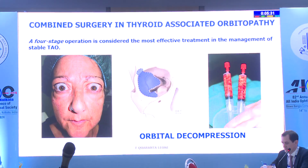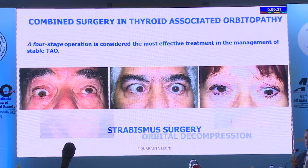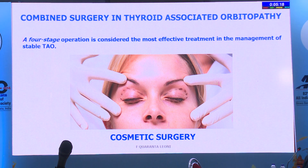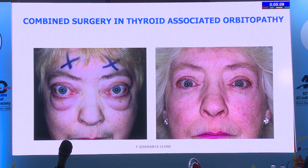For moderate-to-severe thyroid eye disease, the combined four-stage operation is traditionally the best approach: orbital decompression, then strabismus surgery, then eyelid retraction correction, then cosmetic surgery—because every surgery might influence the following steps. However, a patient who had bilateral three-wall decompression with a good result was totally unhappy because decompression has a little-known effect on upper eyelid retraction.